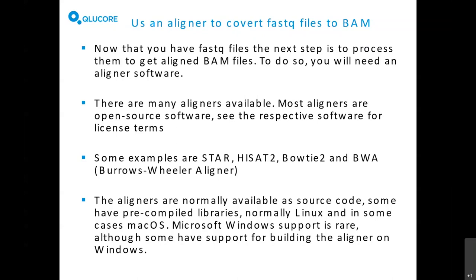The next step is to use an aligner to convert your FASTQ files into BAM files. BAM files can be imported into CluCore Omics Explorer, but first they need to be aligned. We don't provide an aligner because there are so many on the market and people have different pipelines and their own favorites. Many are open source. Here are some examples: STAR, HISAT2, Bowtie2, BWA, etc. They are normally available as source code, with some having pre-compiled libraries, normally for Linux, and in some cases also macOS.